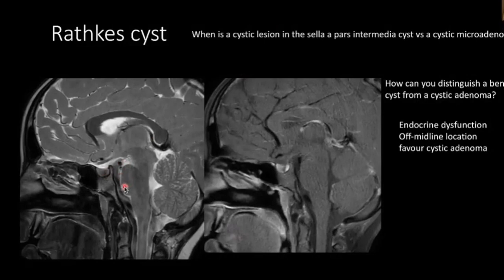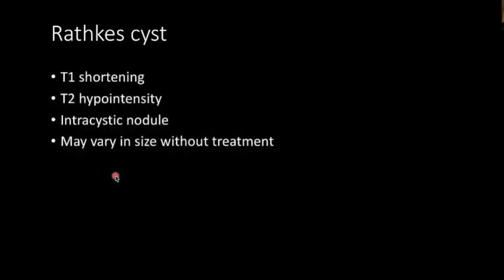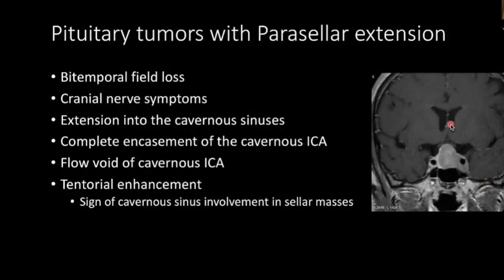Here we have a T2 hypointense and T1 hypointense non-enhancing lesion between the adenohypophysis and the posterior pituitary — this is a classic Rathke's cleft cyst. We should distinguish a Rathke's cleft cyst from a cystic adenoma: if the patient has endocrine dysfunction or an off-midline location, think cystic adenoma. Rathke's cleft cysts are typically midline and T2 hypointense. They may also show T1 hyperintensity and can have a T2 hypointense intracystic nodule, and may vary in size without treatment.